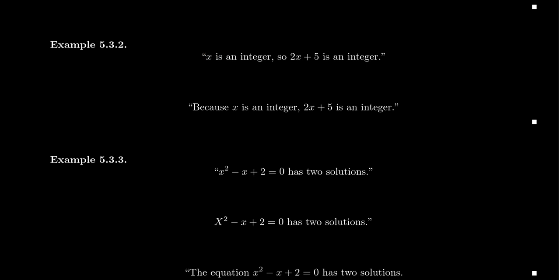Now, with this one, we could be a little bit more clever with how we write it. Instead of saying X is an integer so, we could instead say that because X is an integer, 2X plus 5 is an integer. Notice what happens here. We had the word so versus the word because. Both of these words are suggesting some type of implication.